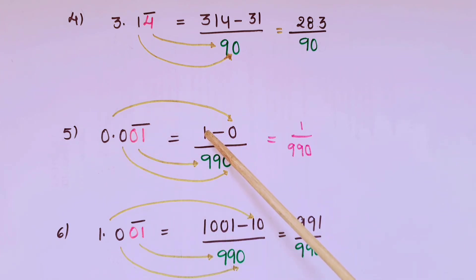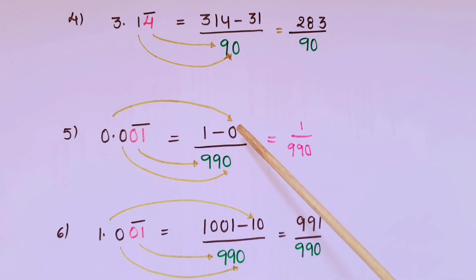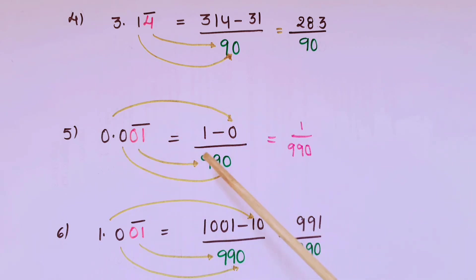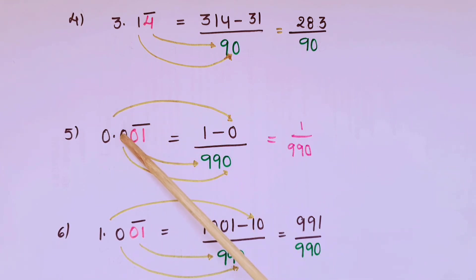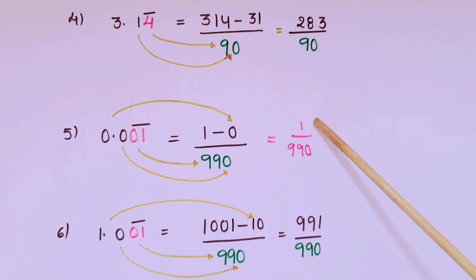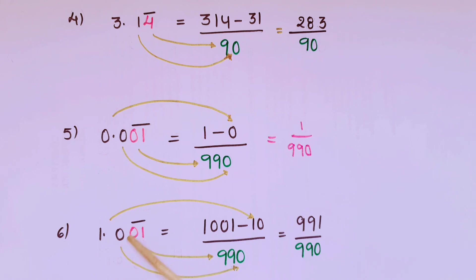The next one is 0.001 bar. First write the whole number, that is 1, then minus the remaining digits — here 0, so write 0. Below the bar there are two digits repeating, so write two nines. After the decimal there is only one digit that is not repeating, so write 10. That is equal to 1 by 990.